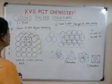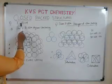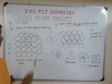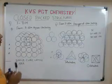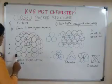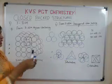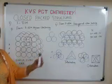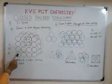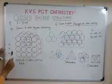Dear students, we are seeing three-dimensional close packing from two-dimensional square close packing. The first layer is named as layer A. The second layer is placed directly on top of the first layer, so that the atoms of the second layer touch the atoms of the first layer. Similarly, we make the third layer and the fourth layer.